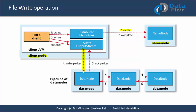As soon as a block is written - suppose block 1 is written on data node 1 - data node 1 starts copying the block to another data node, say data node 3. As soon as data node 3 has written the block, it starts copying to data node 7. As soon as the required level of replication is achieved, the acknowledgement starts from data node 7 to data node 3, then to data node 1, and the final acknowledgement goes to the client.